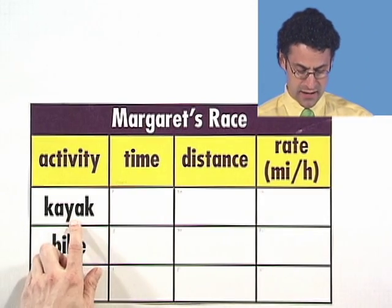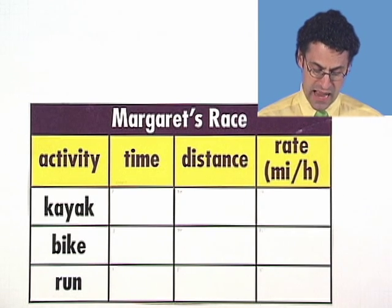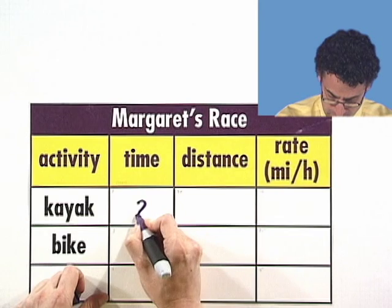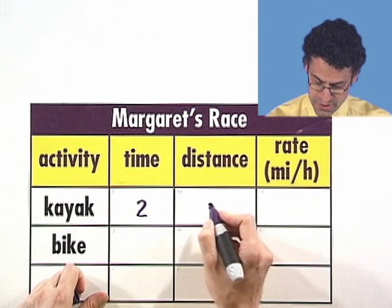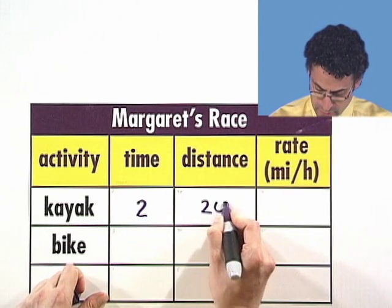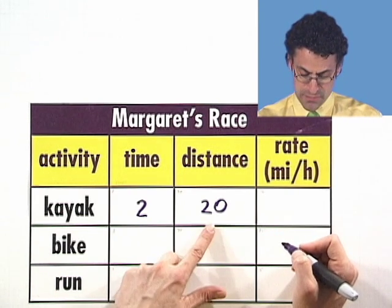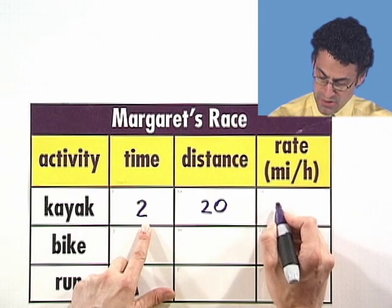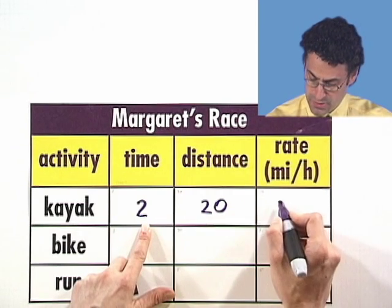So for the kayak activity, how long did she spend in hours? Well, she spent two hours on that. How far did she travel? She traveled 20 miles. So what was her rate? Her rate was 20 miles per two hours, or 10 miles an hour. So 20 over 2, or 10.